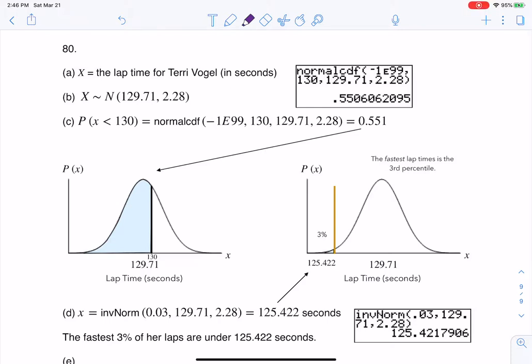Hey Math43, I had a question coming out of chapter 6, number 80, and here we were given info on Terry Vogel, who was a motorcycle racer.